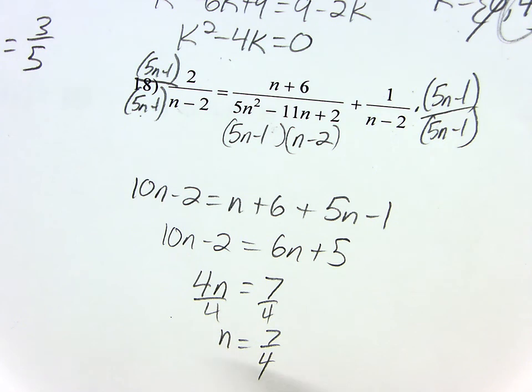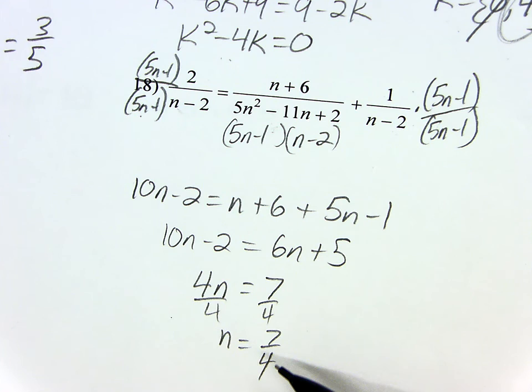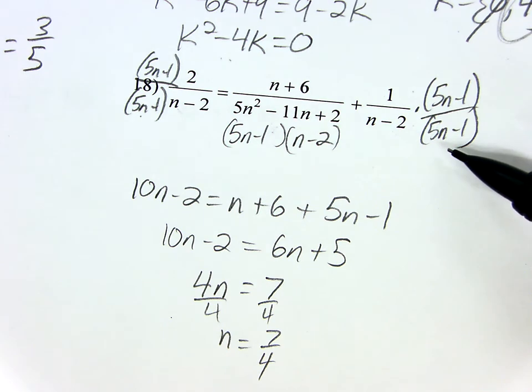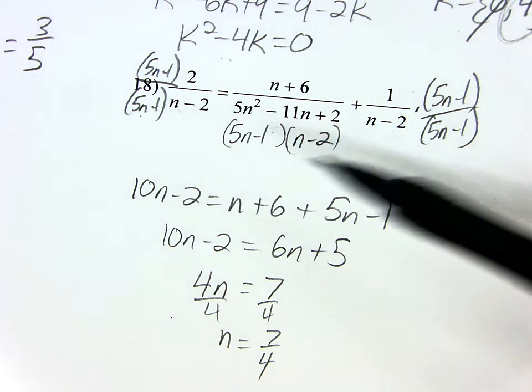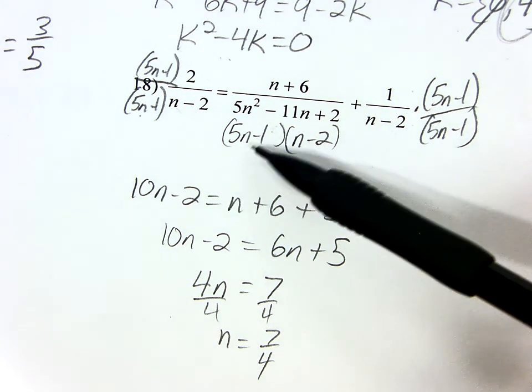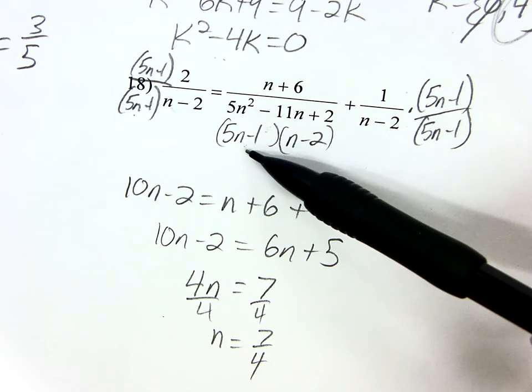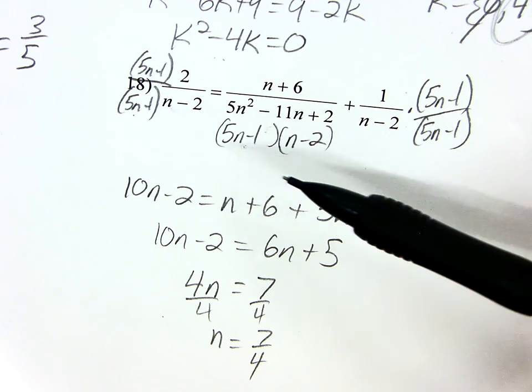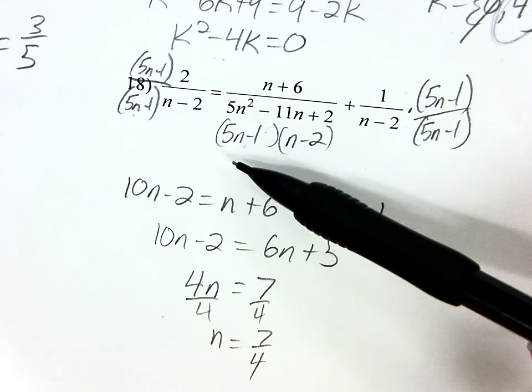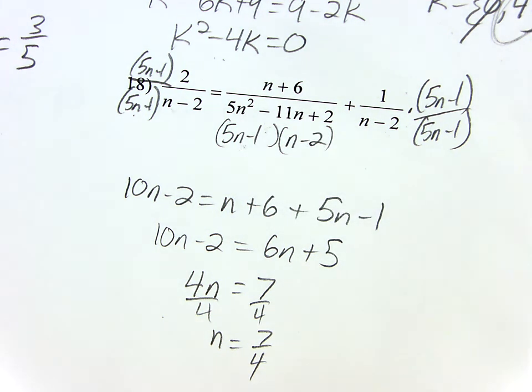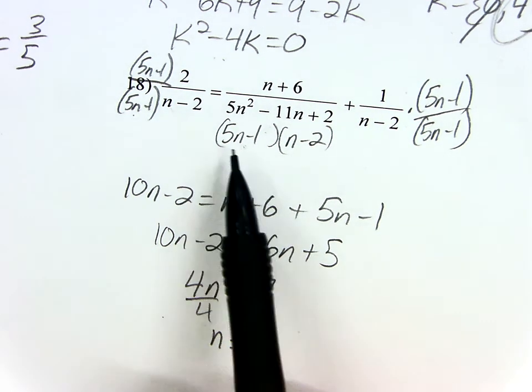Do we agree? Everybody got what I got? So then I just stop and I say to myself, okay, let me just make sure that 7/4 doesn't create any 0s in my denominators. But it looks like it's fine because the only thing that would would be a positive 2 or what? 1/5. Yeah. If I had 1/5 as an answer, I'd have to throw it away because it would make that guy turn into a 0.